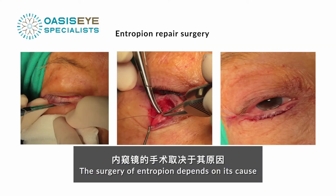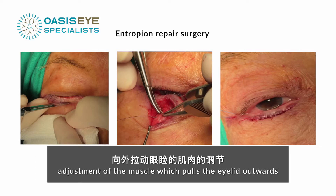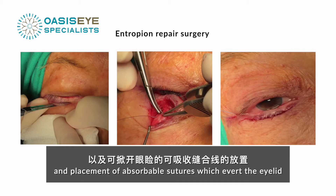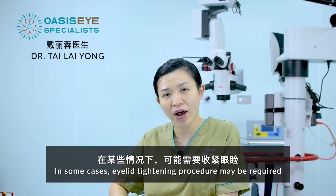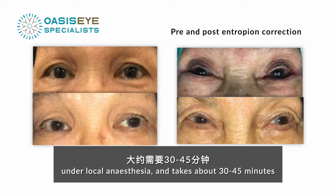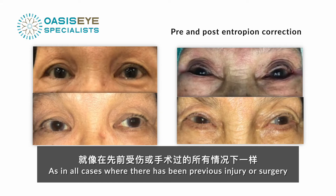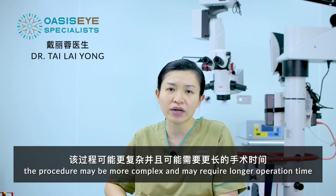The surgery for entropion depends on its cause and usually involves a horizontal skin fold incision of the lid, adjustment of the muscle which pulls the eyelid outward, and placement of absorbable sutures which evert the eyelid. In some cases, an eyelid tightening procedure may be required. The procedure is usually performed on an outpatient basis under local anaesthesia and takes about 30 to 45 minutes. As in cases where there has been previous injury or surgery, the procedure may be more complicated and may need a longer operation time.